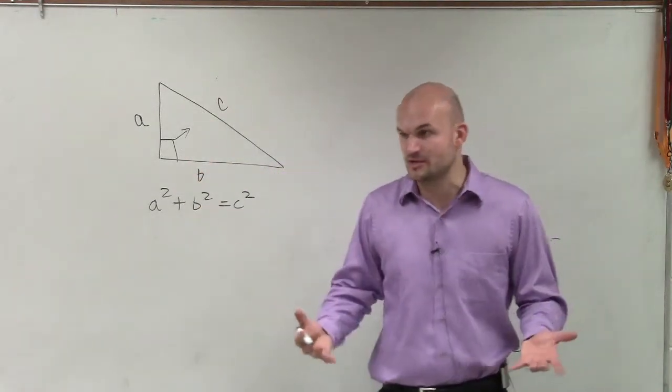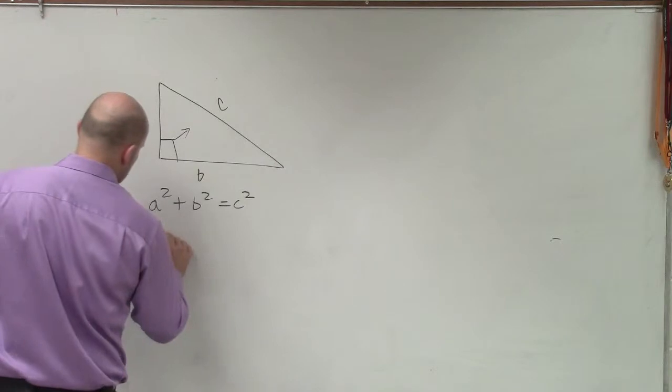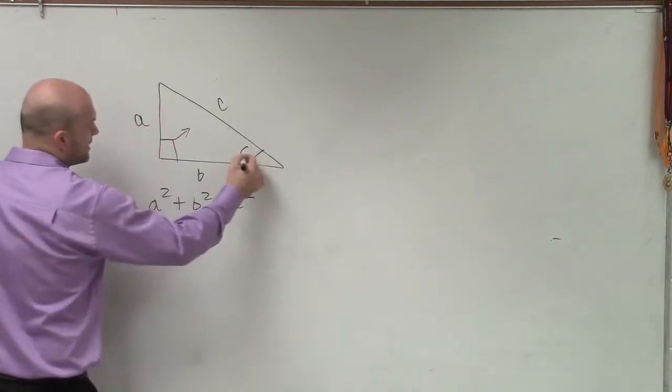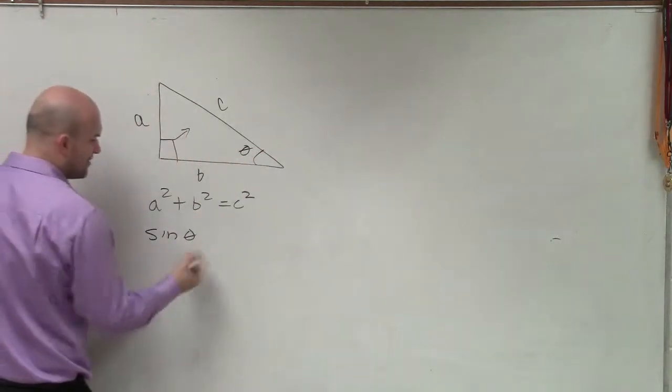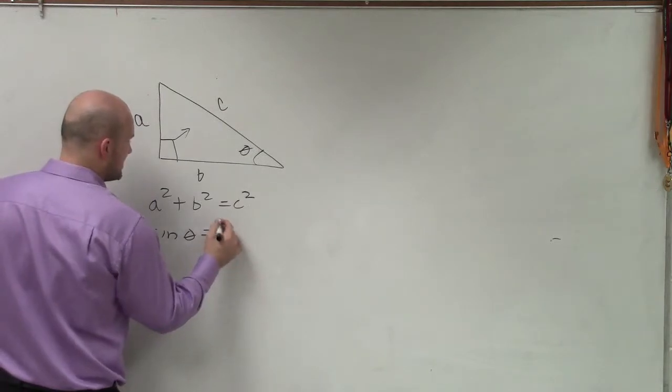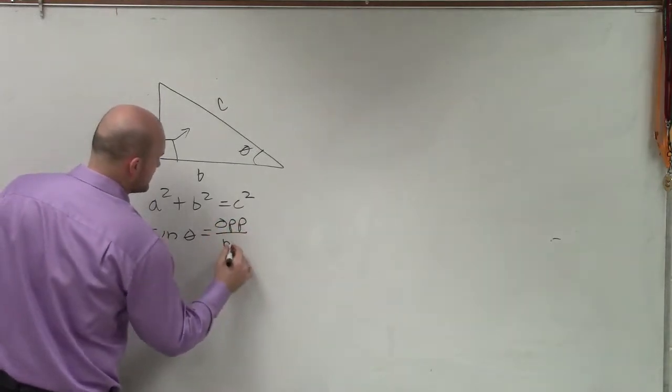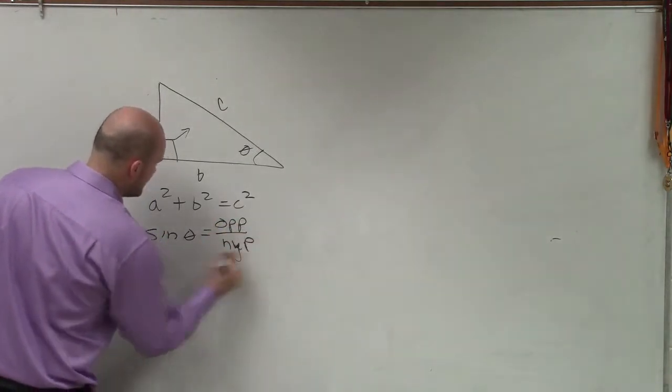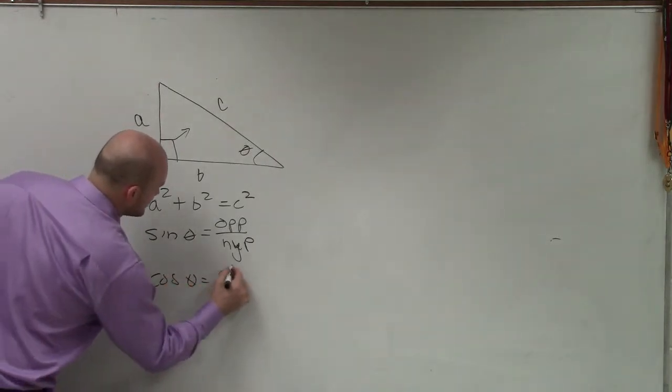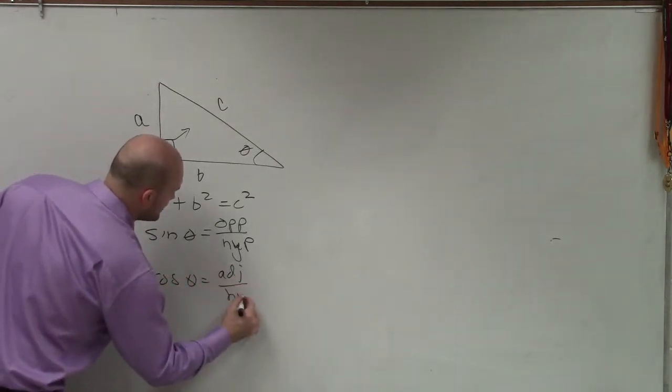So you can do sine. Let's call theta right here. But theta could also be there. It just all depends. Theta, remember, is going to be opposite over hypotenuse. You have cosine of theta equals adjacent over hypotenuse.